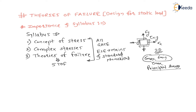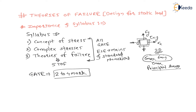For the GATE examination, considering only this syllabus — not the entire strength of materials, but only these three topics from strength of materials — for civil engineering they will ask for a minimum of two marks to a maximum of four marks. At least every year there will be a two-mark question, but on average they will ask for three to four marks.